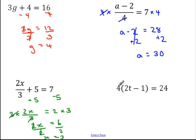Last example: I have brackets here, so I'll start by expanding them. 4 times 2t is 8t, and 4 times minus 1 is minus 4, which equals 24.